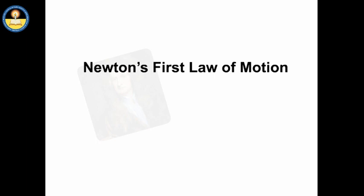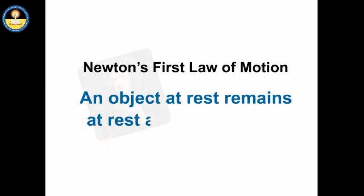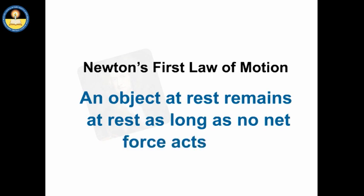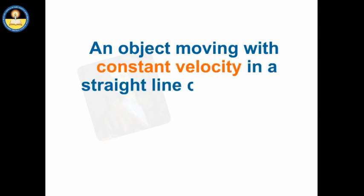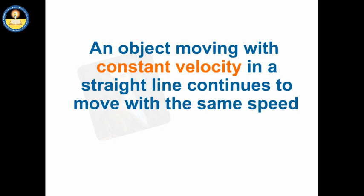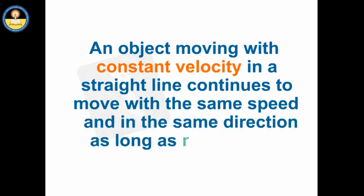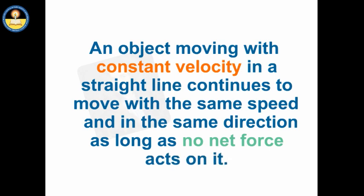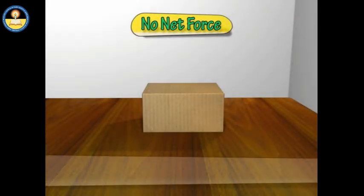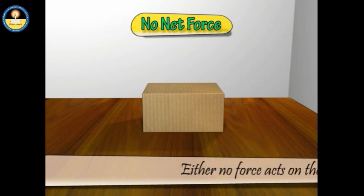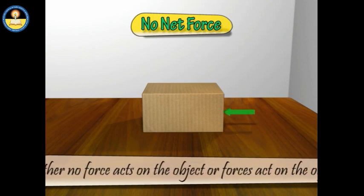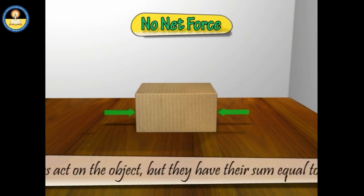Newton summarised Galileo's conclusions mathematically, which is known as Newton's first law of motion. It states that an object at rest remains at rest as long as no net force acts on it. Similarly, an object moving with constant velocity continues to move with the same speed and in the same direction as long as no net force acts on it. No net force means either no force acts on the object, or forces act on it but their sum equals zero.